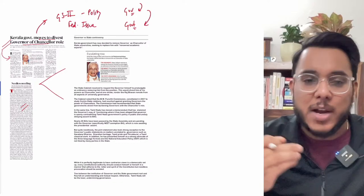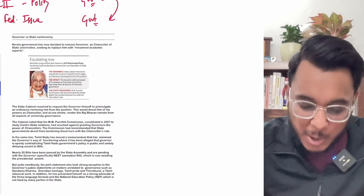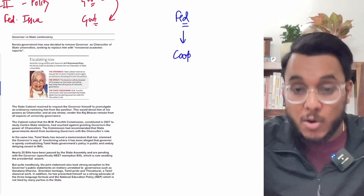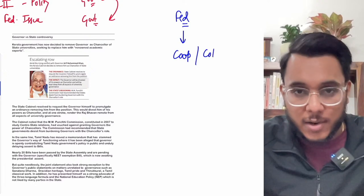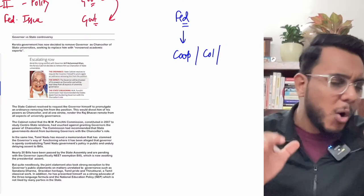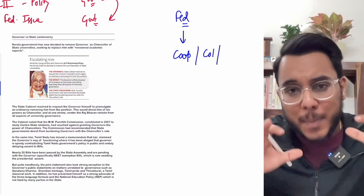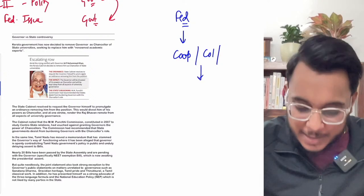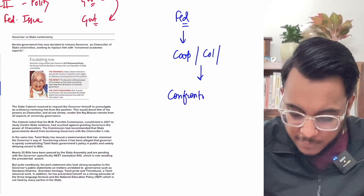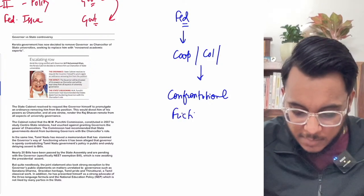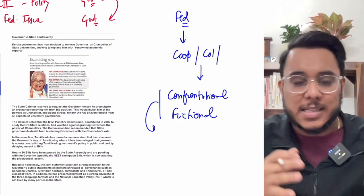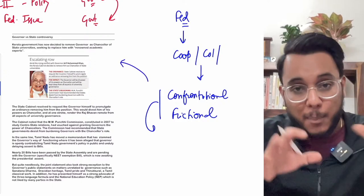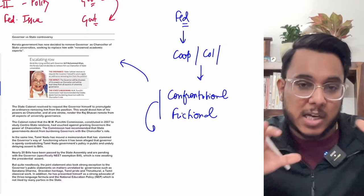Indian federalism has been called cooperative federalism, collaborative federalism, and bargaining federalism — all pointing to inherent Centre-state cooperation. But a new term is becoming popular: confrontational federalism, also called frictional federalism, which describes the irritants emerging between the Centre and the state. Many of these irritants arise in the context of the Governor-versus-government relationship.